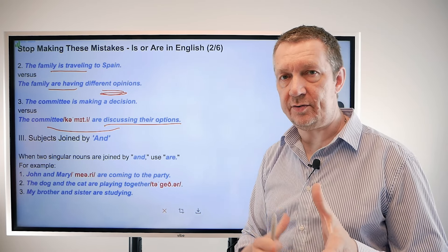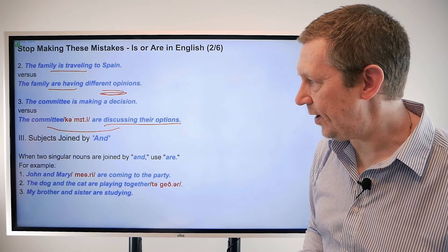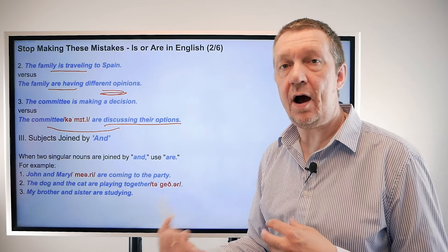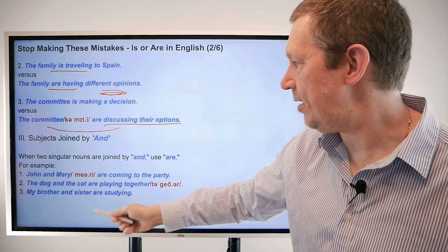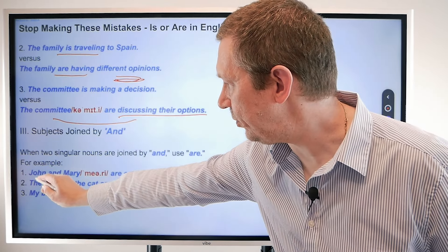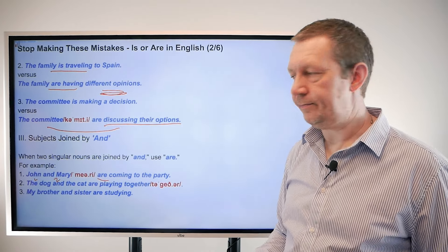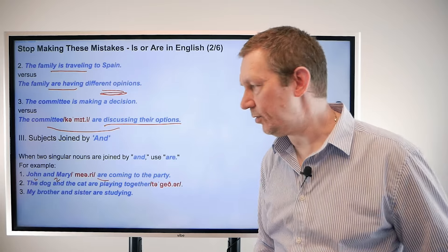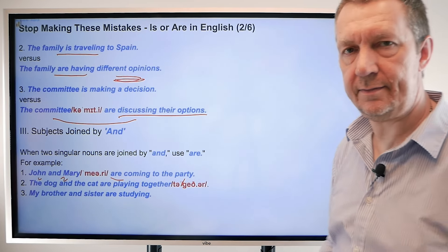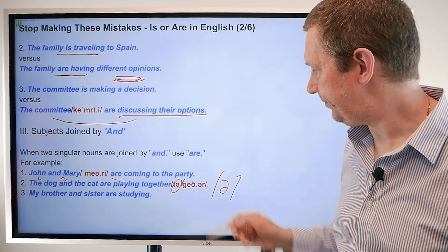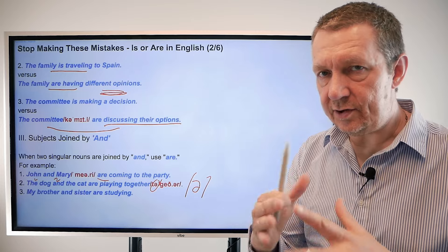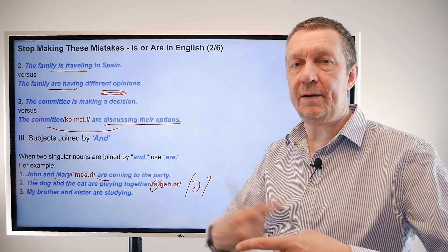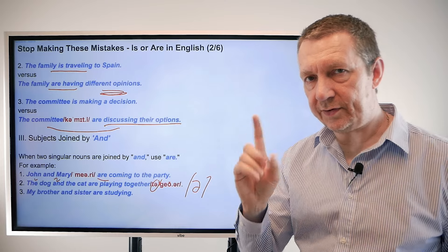We also have subjects joined by 'and.' When two singular nouns are joined by 'and,' we use 'are' because we have two different people or things. So 'John and Mary are coming to the party' — two people makes it plural. 'The dog and the cat are playing' — two things, so plural. 'My brother and sister are studying.' When something becomes a list it becomes plural.